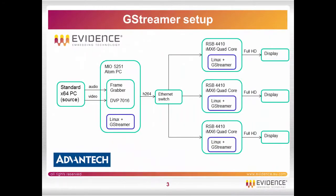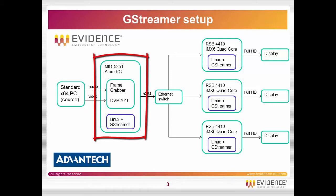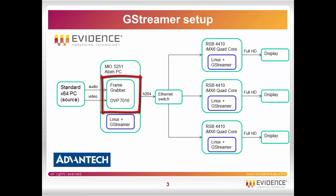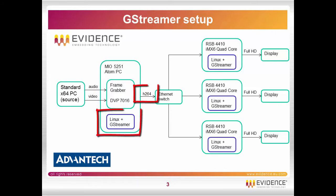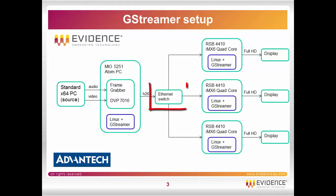The G-Streamer setup we are going to show is the following. We have a standard PC as a source of audio-video information. Then there is a Mio 5251 Atom PC which is equipped with a FrameGrabber, and this Atom PC is going to encode using hardware acceleration the stream using H.264.